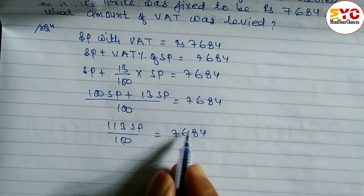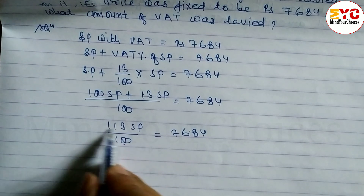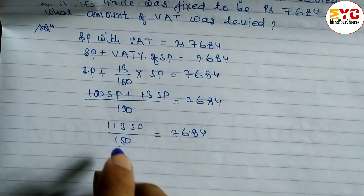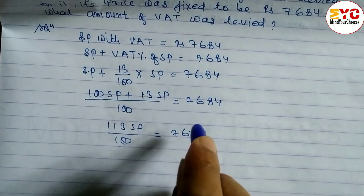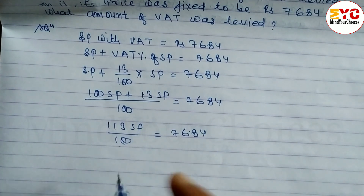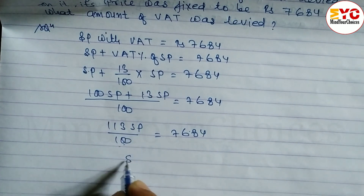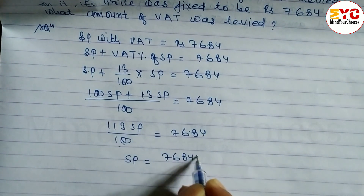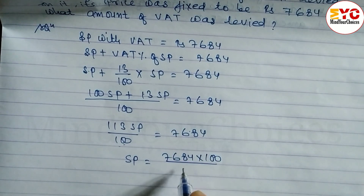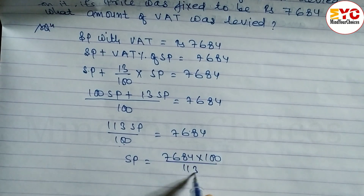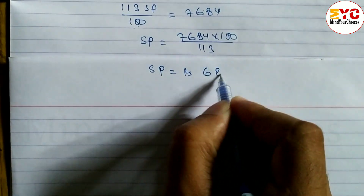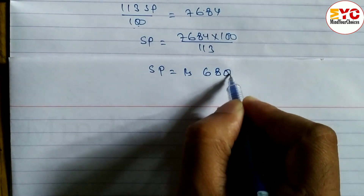Now cross multiply: denominator goes to numerator and numerator goes to denominator. So SP equals 7684 into 100 divided by 113. The value of SP is rupees 6800.